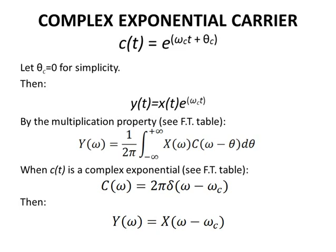By the multiplication property from the Fourier transform table, Y(ω) = (1/2π) ∫_{-∞}^{∞} X(ω)C(ω - θ)dθ.